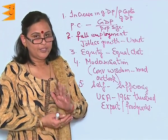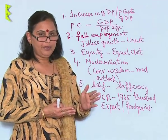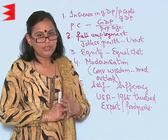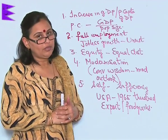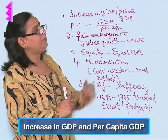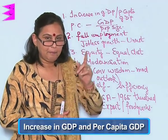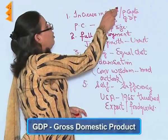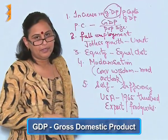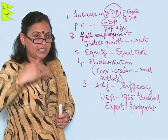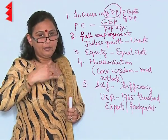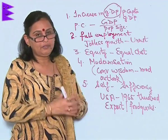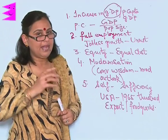In the previous clipping, I spoke about the long-term goals and the short-term goals. Let me first talk about the long-term goals. The first long-term goal is increase in GDP and increase in per capita GDP. GDP, of course, is the gross domestic product — that is, increase in the domestic production of the country will naturally lead to increase in the income, the wealth, and the richness of the country in layman's terms.